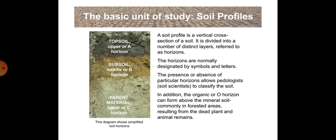The basic unit of study, soil profiles, is a vertical cross section of a soil. It is divided into a number of distinct layers referred to as horizons. The horizons are normally designated by symbols and letters. The presence or absence of particular horizons allows pedologists, or we can say soil scientists, to classify the soil. In addition, the organic or O-horizon can form above the mineral soil, commonly in forested areas, resulting from dead plant and animal remains. This diagram shows simplified soil horizons.